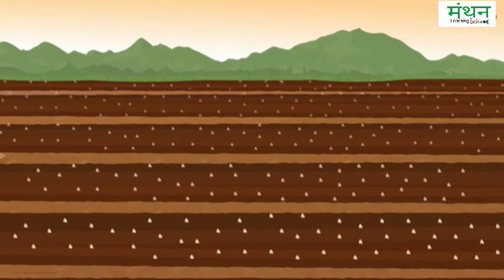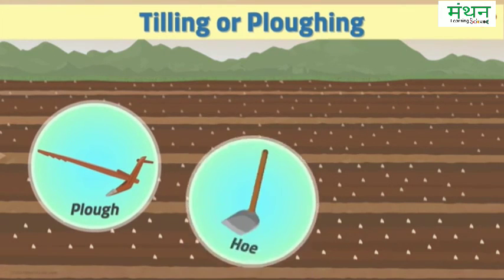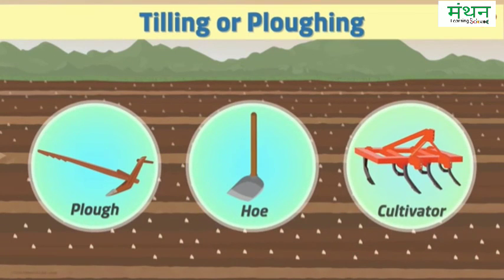Now let us look closely at the equipment that aids the process of tilling or ploughing the land. There are mainly three types of equipment used in the first stage of agriculture — a plough, hoe, and a cultivator are the three major ones. We will study each of them in detail in our next video.